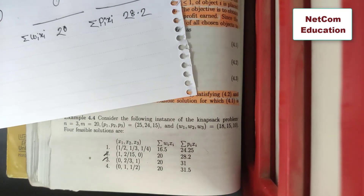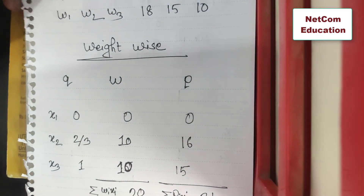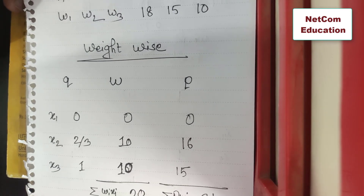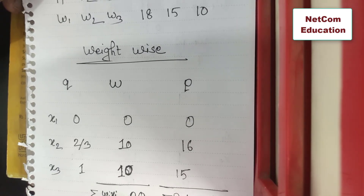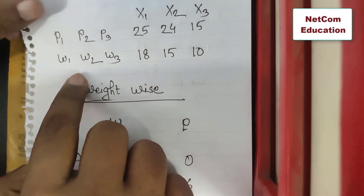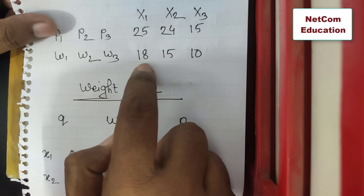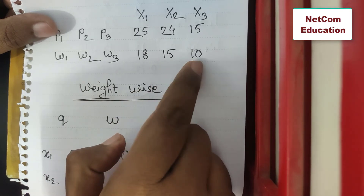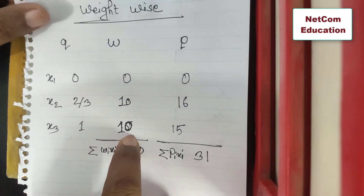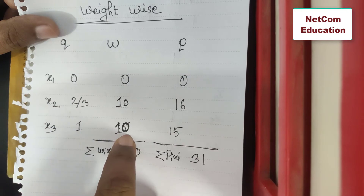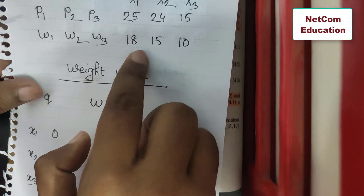Now let's look at three numbers of feasible solutions. The third solution is weight-wise. The values are 1, 2, 3, 5, 3, and 10, giving us three candidate solutions.